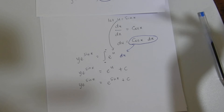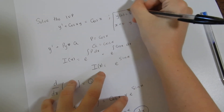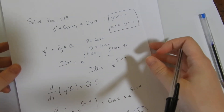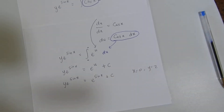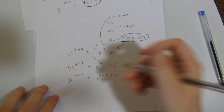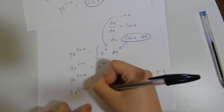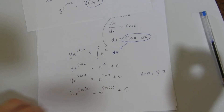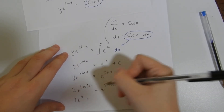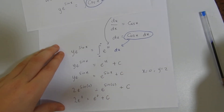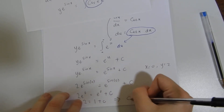Now we need to find the constant, and this is where we use the initial value. We were given y(0) = 2, so when x = 0, y = 2. We substitute x = 0 and y = 2 into the equation. We know sin(0) = 0, so we get 2·e^0 = e^0 + c. Since e^0 = 1, we get 2 = 1 + c.